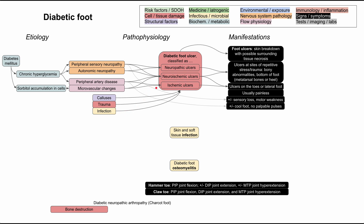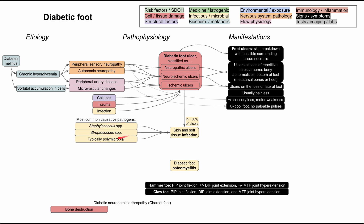Infections predispose you to ulcers, but ulcers also predispose you to infections. Ulcers are a break in the skin, and when you break that immunological barrier, you're predisposing your skin and soft tissue to getting infected. Approximately 50% of ulcers have a skin and soft tissue infection associated with them. The most common pathogens are staph and strep species, but in most cases these are polymicrobial ulcers with multiple organisms present.